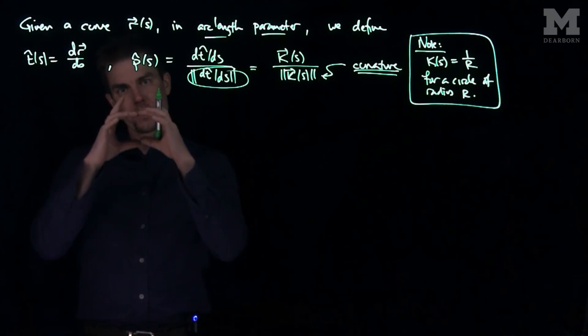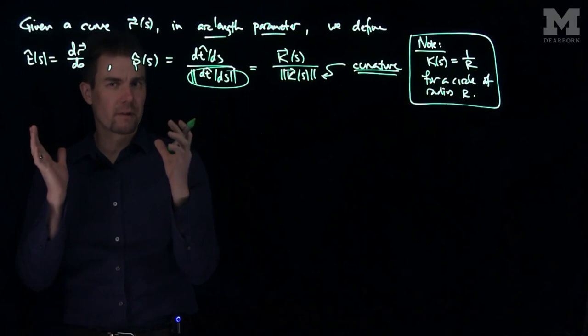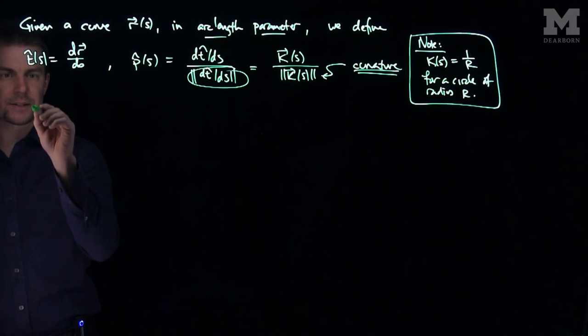But we'll see that what this curvature is, the reciprocal of the curvature, is the radius of a circle that is tangent to the curve and basically hugs the curve or envelops the curve. So that's something we want to keep in the back of our mind.